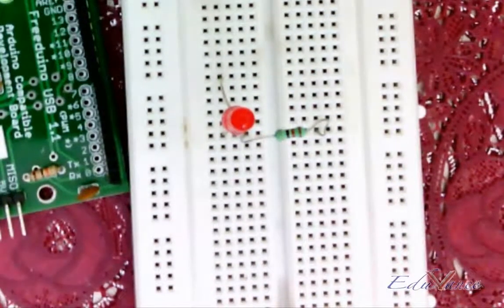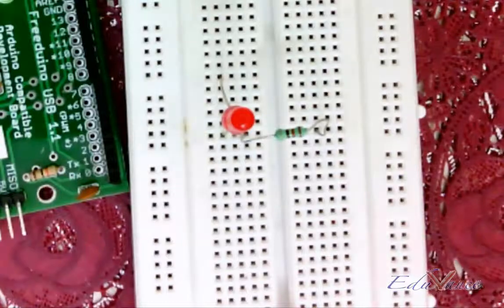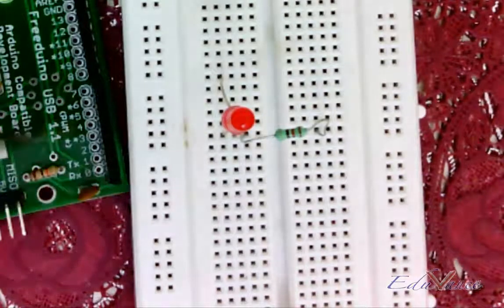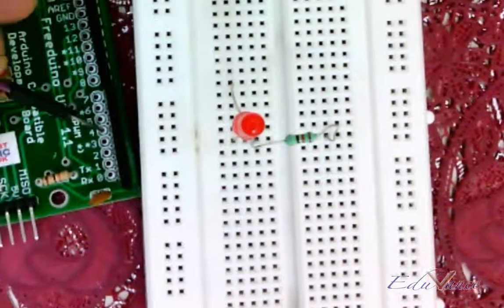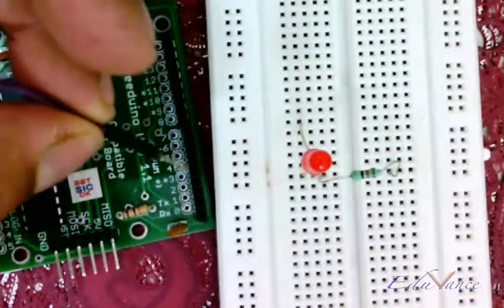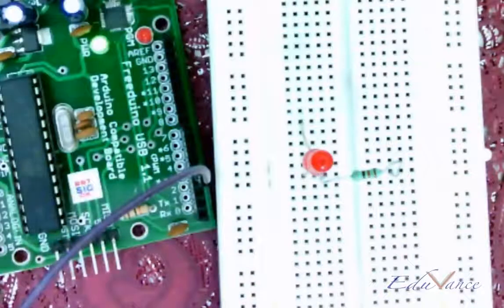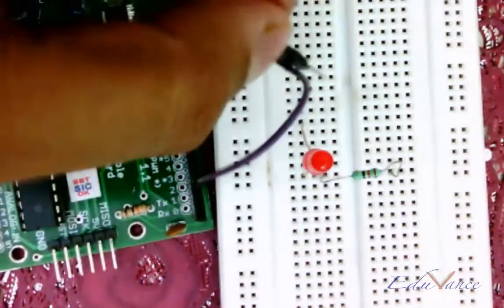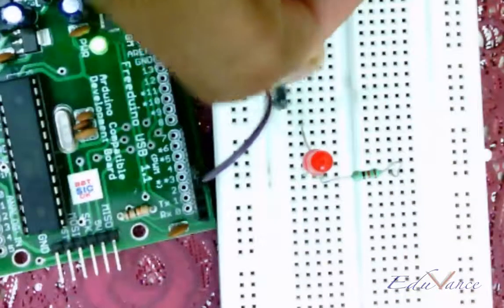The next connection we have to make is pin number 4 which is this one, pin number 4 of your Arduino is connected to your anode which is here, this one.